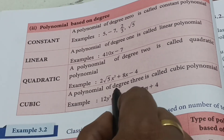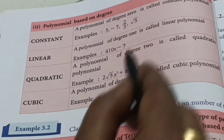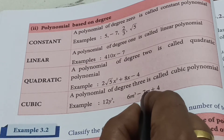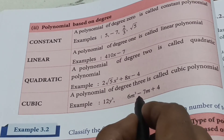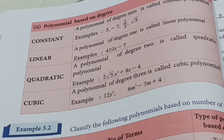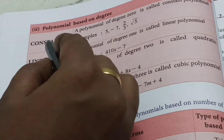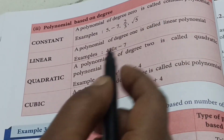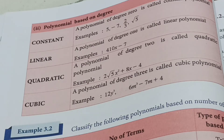A polynomial of degree 3 is called a cubic polynomial. For example: 12Y cube, 6N cube minus 7N plus 4, or 30Z cube plus 6 — these are all examples of cubic polynomials. So: constant polynomial is degree 0, linear polynomial is degree 1, quadratic polynomial is degree 2, and cubic polynomial is degree 3. Note: the degree of the zero polynomial is not defined.